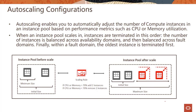Instance configuration and instance pools are the basis for auto scaling. Auto scaling enables you to automatically adjust the number of compute instances in a pool based on performance metrics such as CPU or memory thresholds. Today the only policy supported is threshold-based, and only CPU and memory are supported, though more will be added in future.